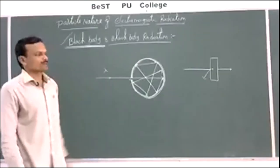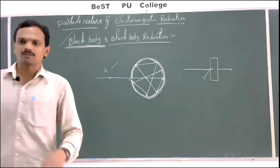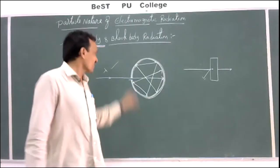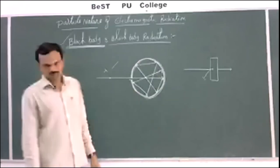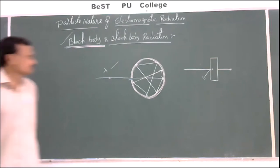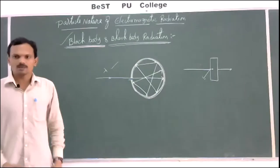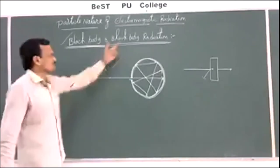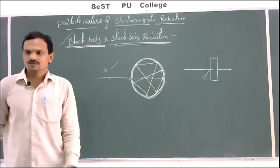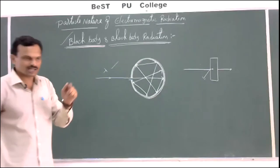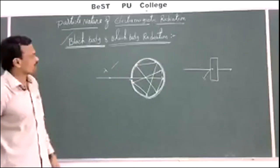The radiation absorbed in the hollow sphere can be re-emitted with a different wavelength than what was passed in. So this is an example of a black body. There is no perfect black body in the universe, but a hollow sphere inside-coated with platinum black can act as one. The radiations emitted by the black body are called black body radiations.